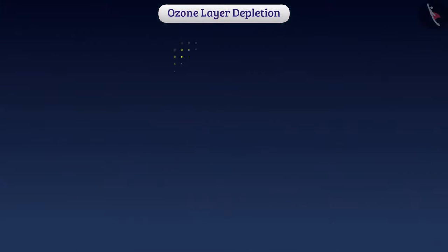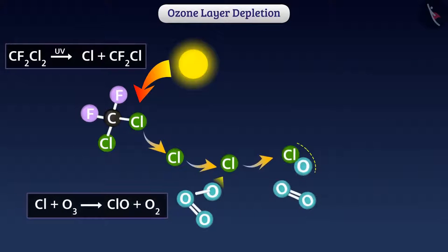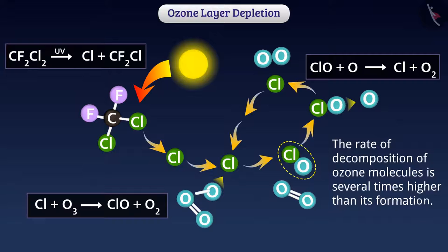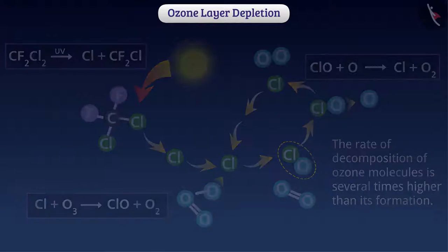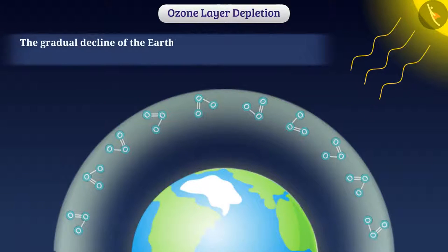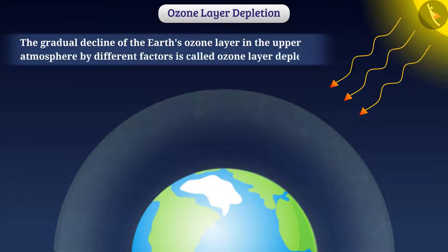In the upper atmosphere, ultraviolet radiations decompose these compounds producing molecules of chlorine. Chlorine atoms, in turn, decompose ozone molecules into oxygen. One atom of chlorine is capable of decomposing about 1 lakh molecules of ozone. The rate of decomposition of ozone molecules is several times higher than its formation. Therefore, the ozone layer is gradually declining. The gradual decline of the Earth's ozone layer in the upper atmosphere by different factors is called ozone layer depletion.